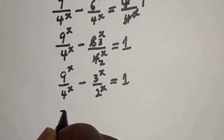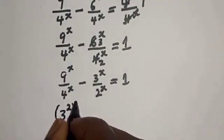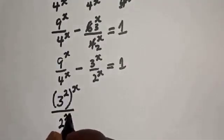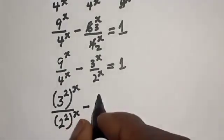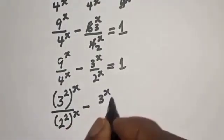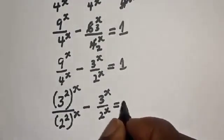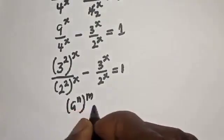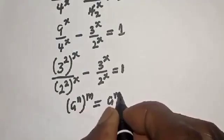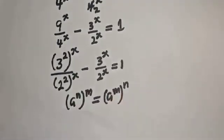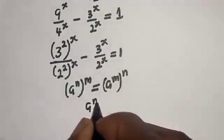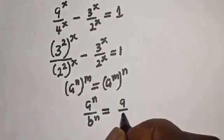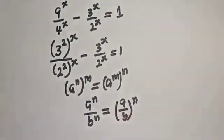9 raised to the power s can be written as 3 squared raised to the power s, and 4 raised to the power s can be written as 2 squared raised to the power s. Using the rule: a raised to power n raised to power m equals a raised to power m times n, and a raised to power n over b raised to power n equals (a over b) raised to power n.